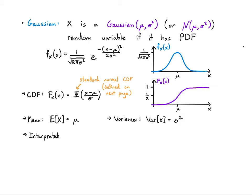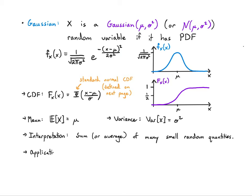The interpretation: think of it as the sum or average of many many independent random quantities. Applications include modeling noise — since noise can be thought of as contributions of many small effects adding up — as well as linear systems and modeling high-dimensional data. We'll see how it extends to higher dimensions in a later video.